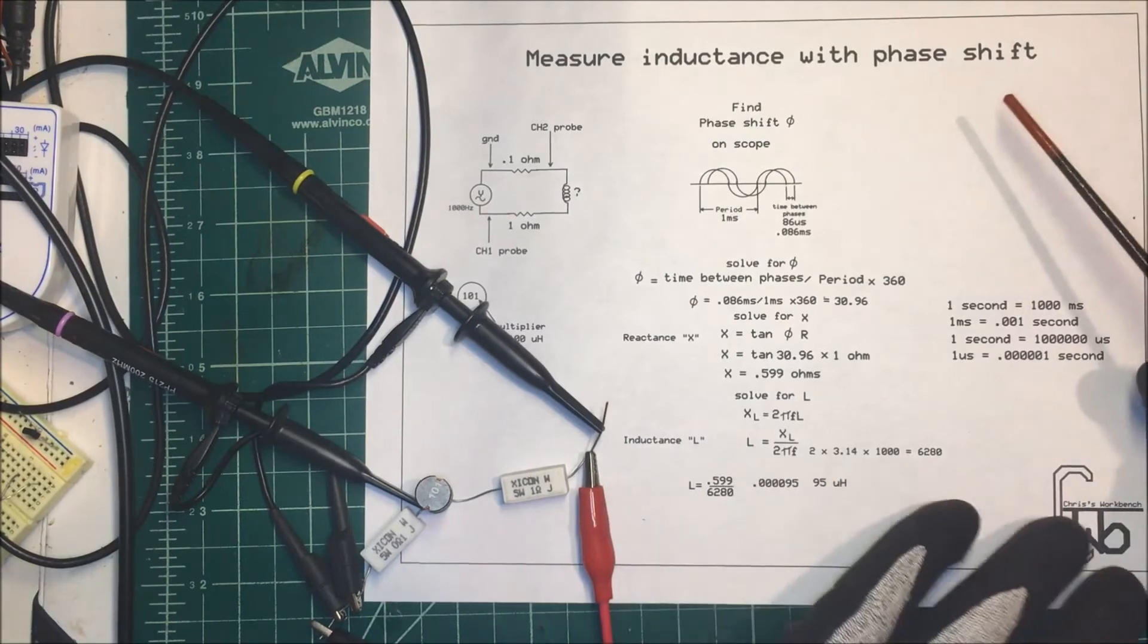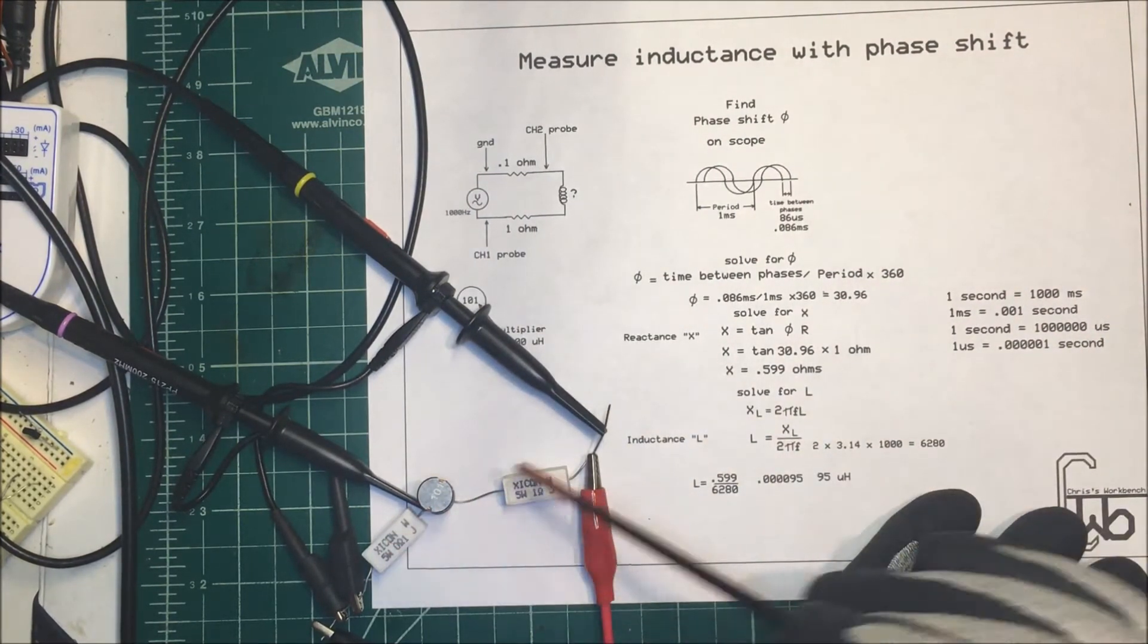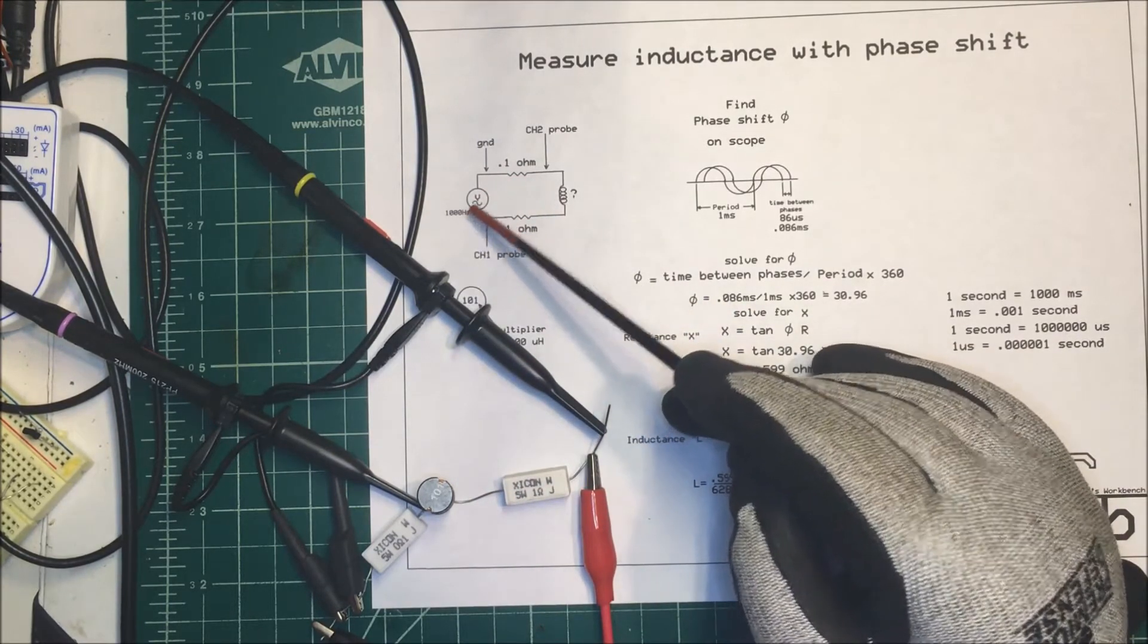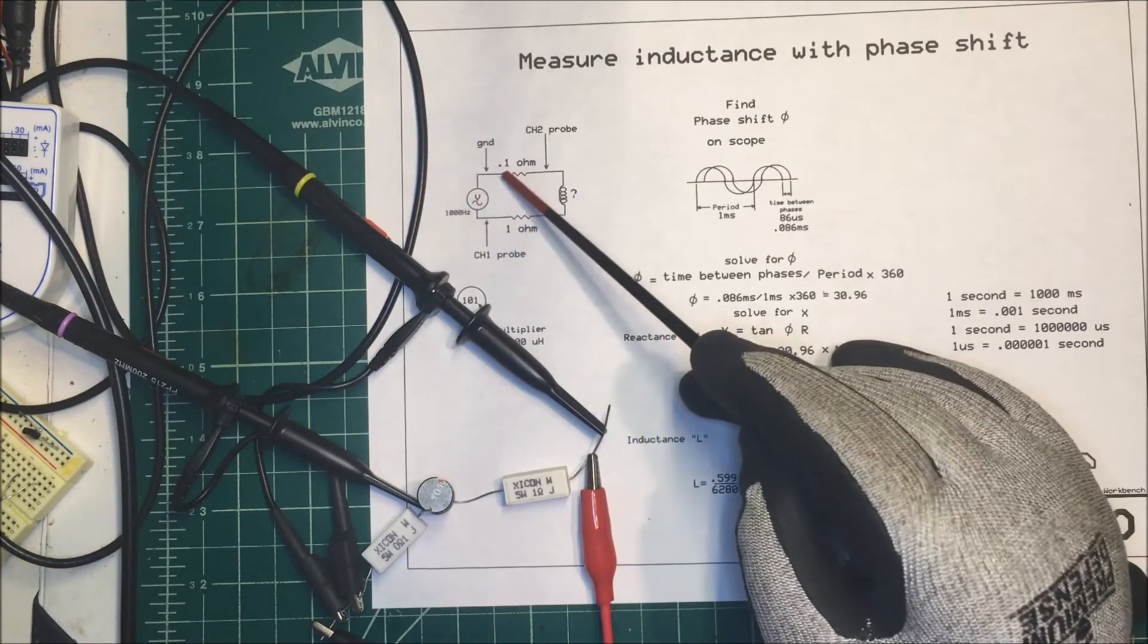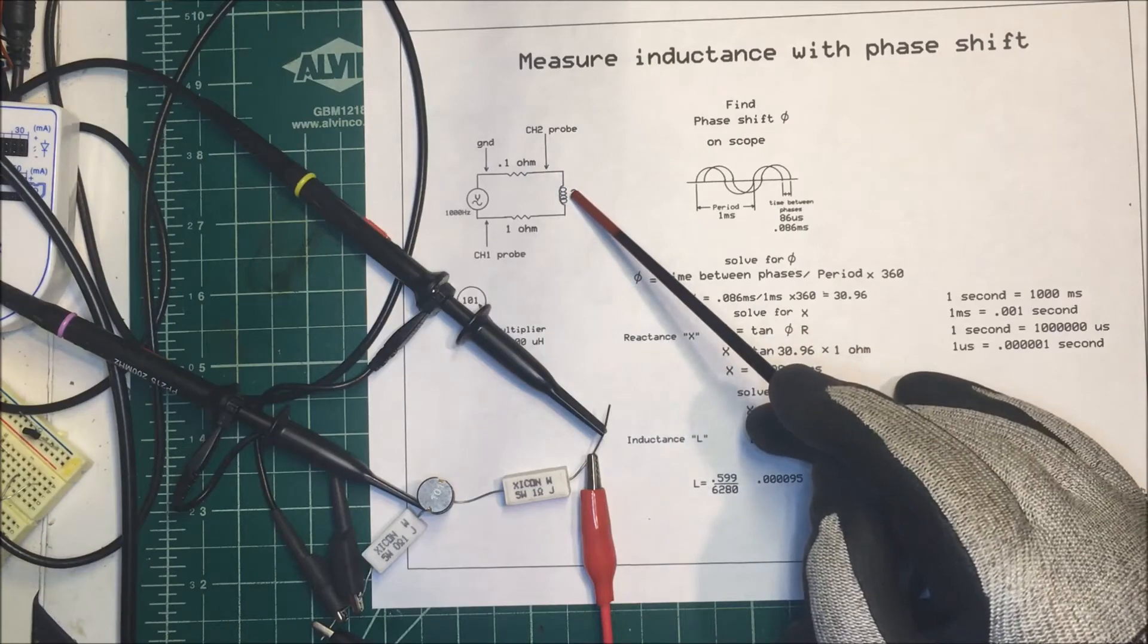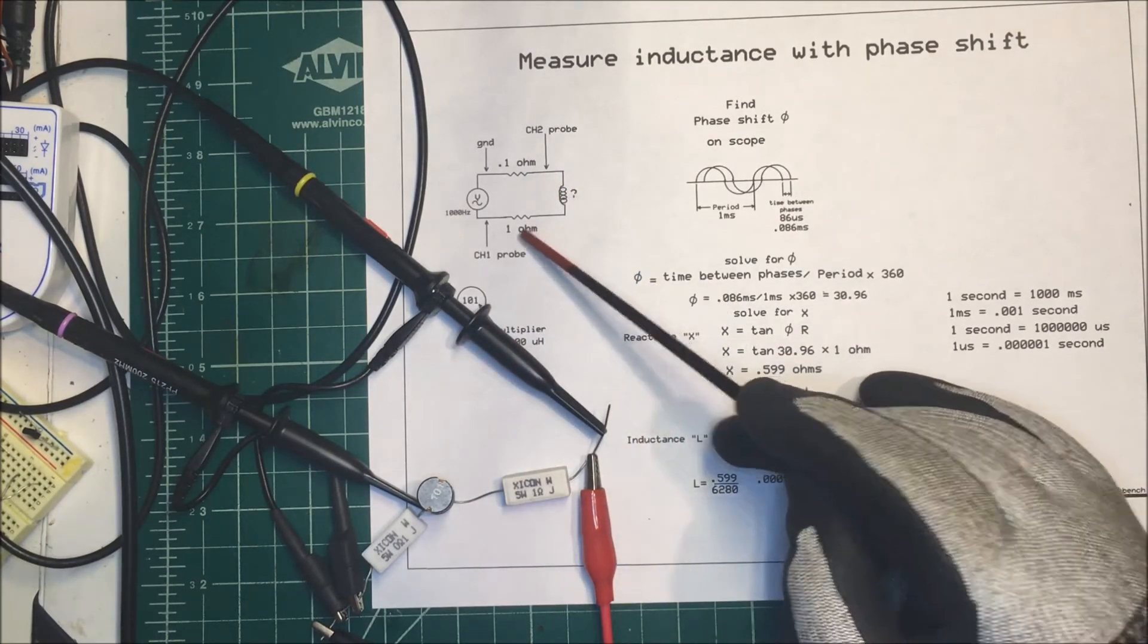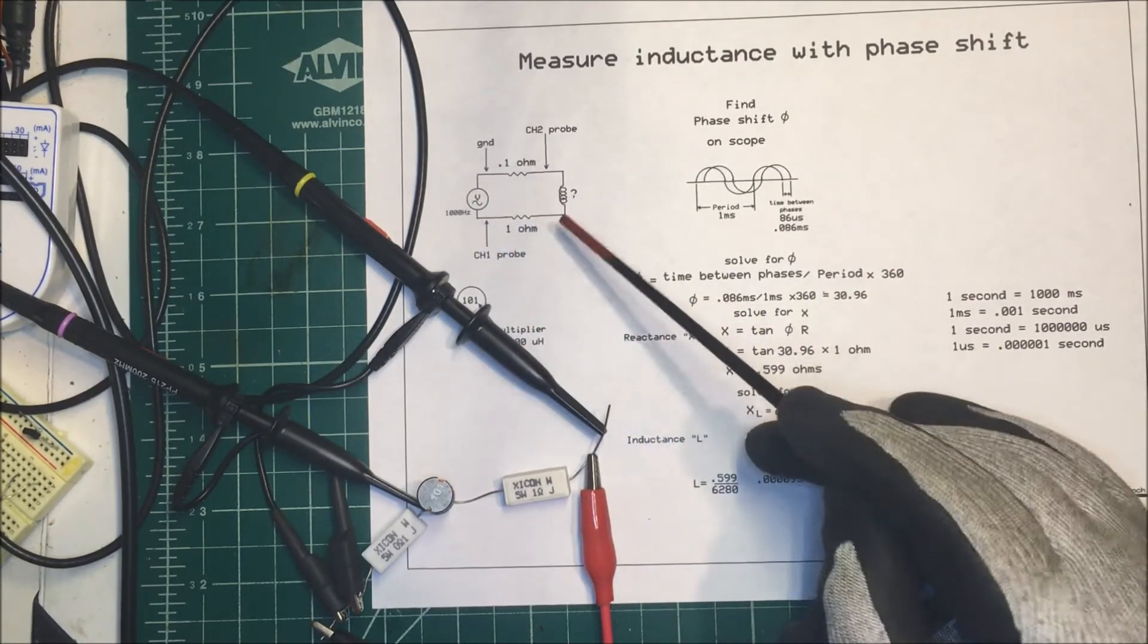Let's try to measure the inductance of a coil using phase shift. I have a little unit set up here with a 1000 Hertz source sine wave, a 0.1 ohm resistor that's going to be my shunt, an unknown inductor value, and a 1 ohm resistor in series with that.